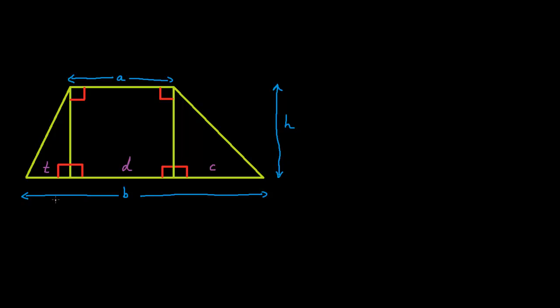Now that we've got all of this information, let's find the area of this trapezium. The area of this rectangle here is A multiplied by H. The area of this right-angled triangle here is C multiplied by H divided by 2. And the area of this right-angled triangle over here is T multiplied by H divided by 2.